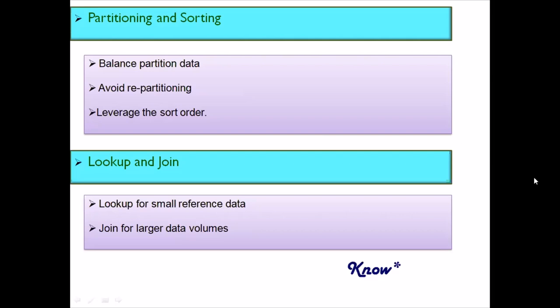Avoid repartitioning, especially when dealing with high data volumes. Try to maintain the same partition and sort order throughout. Partition on the keys required by most stages from the start, and maintain that partition so you do not need to repartition again. Similarly, leverage the sort order — maintain the sorting from your first step so that later stages can take advantage of it.